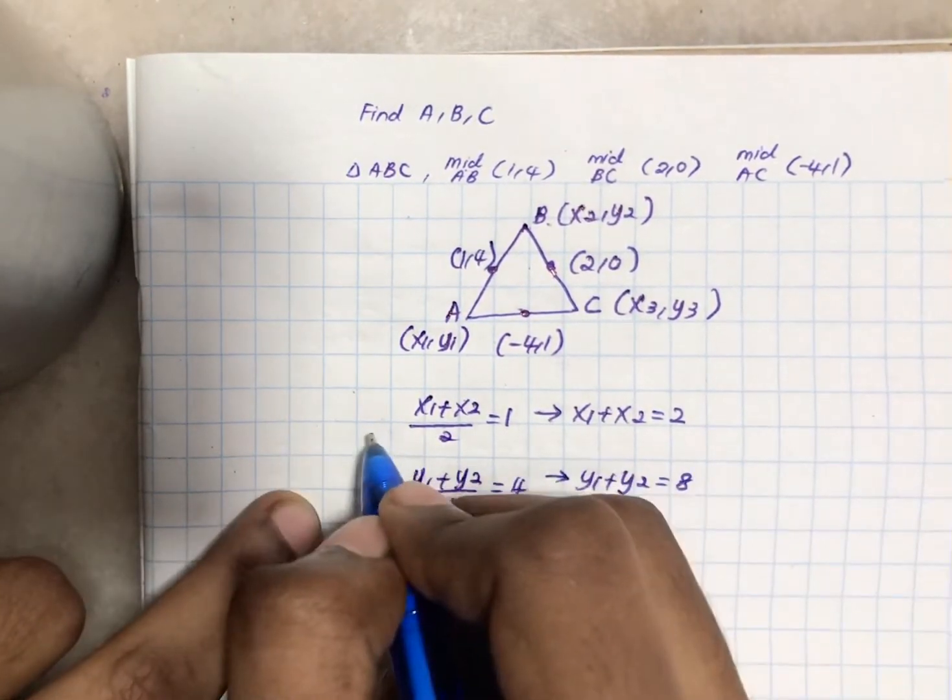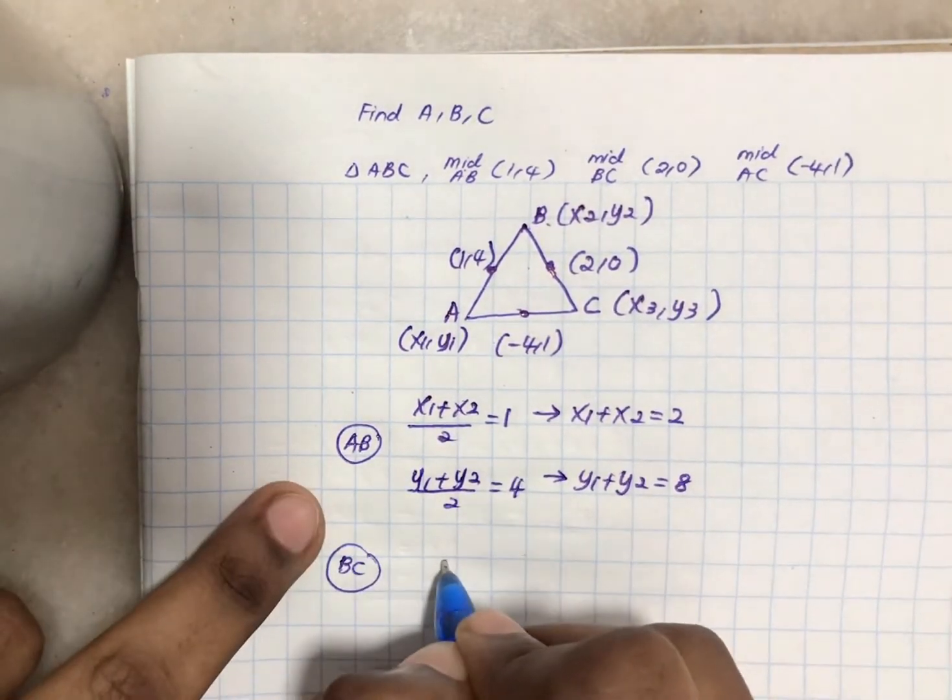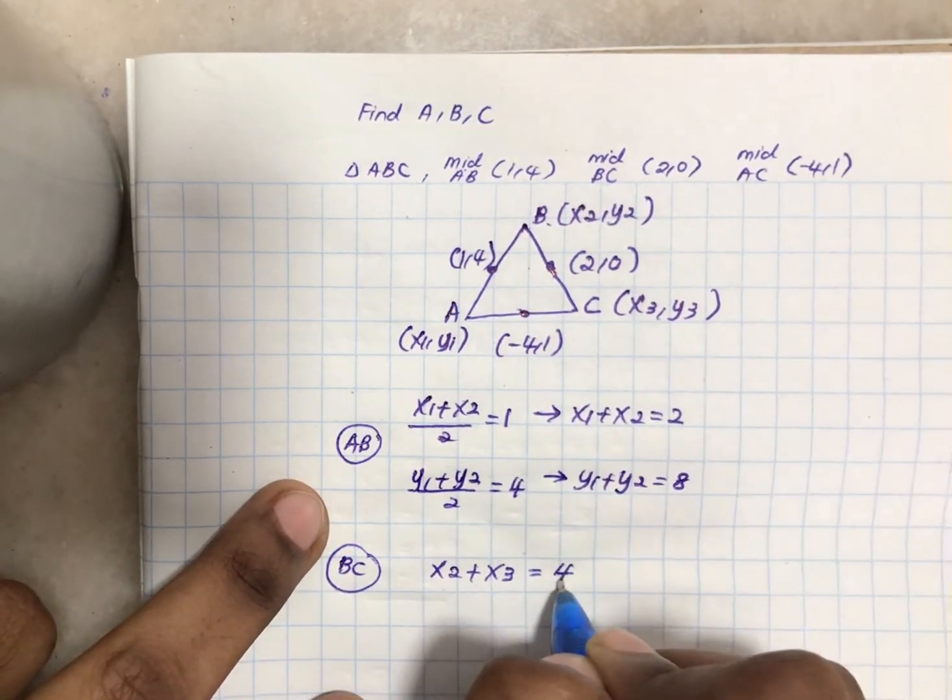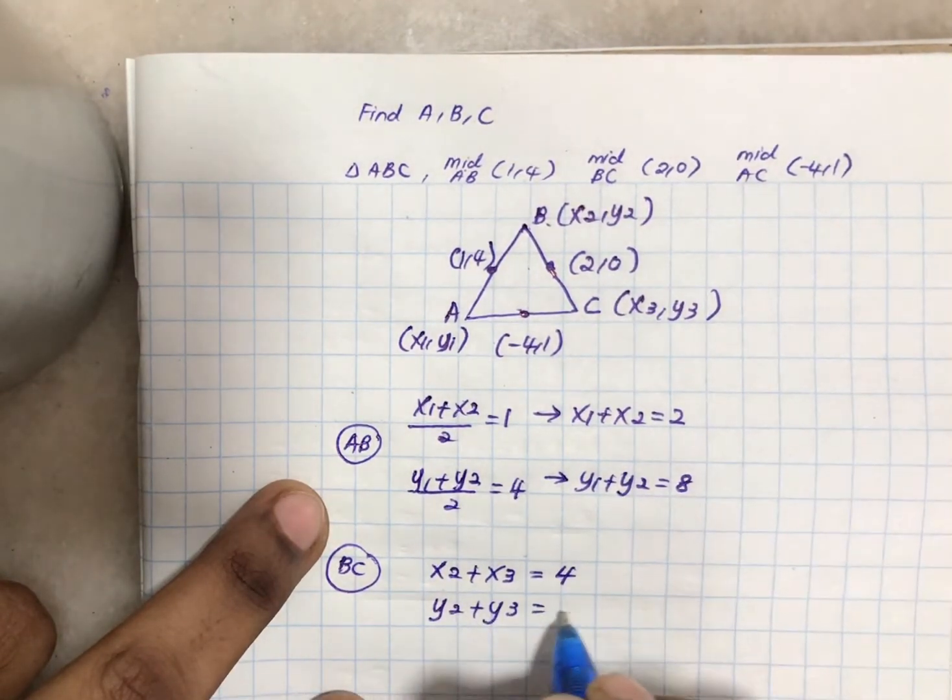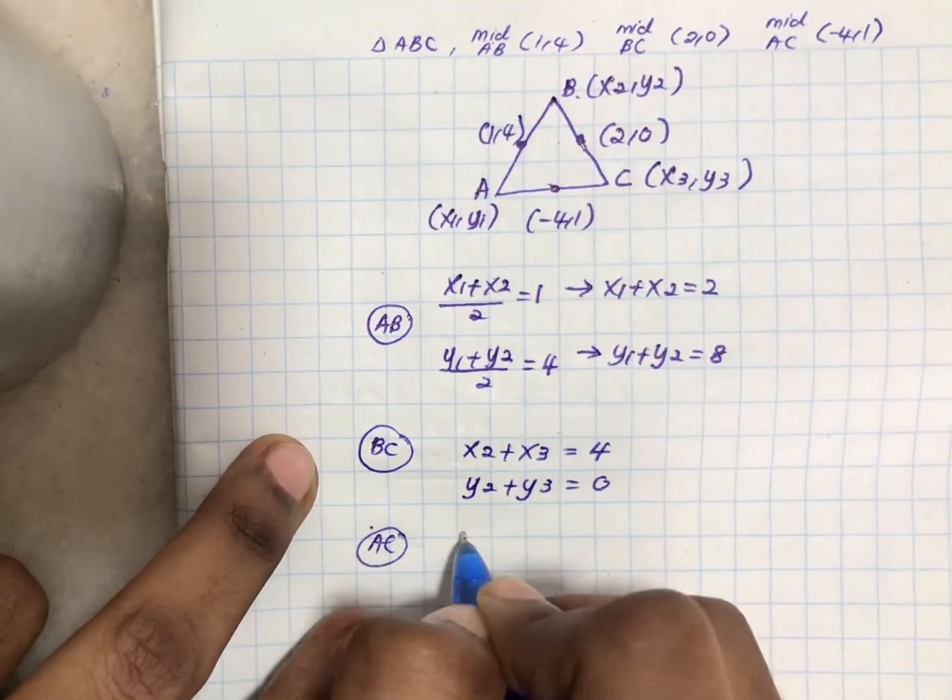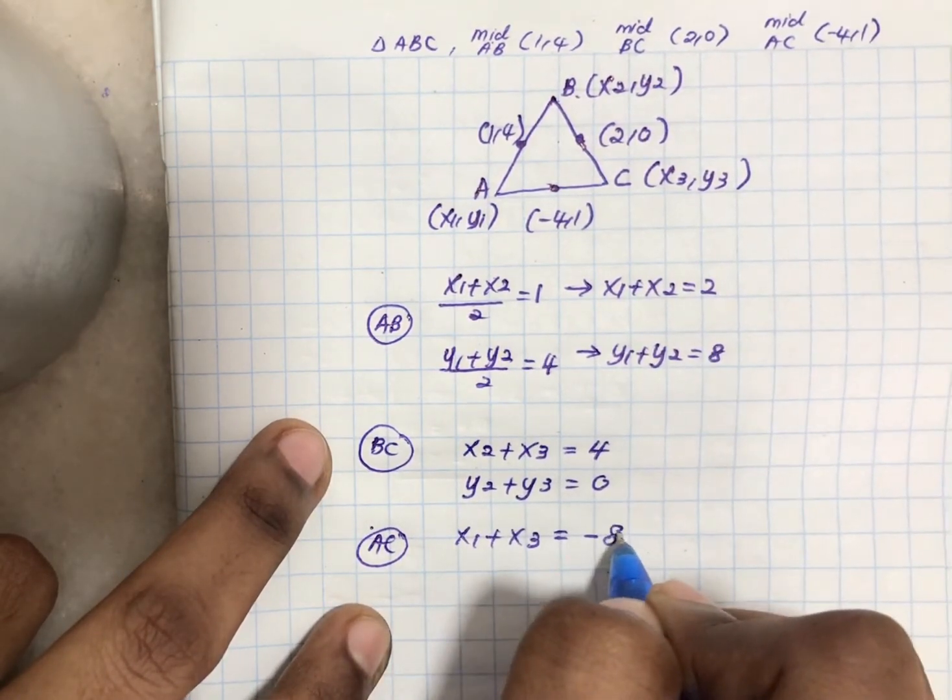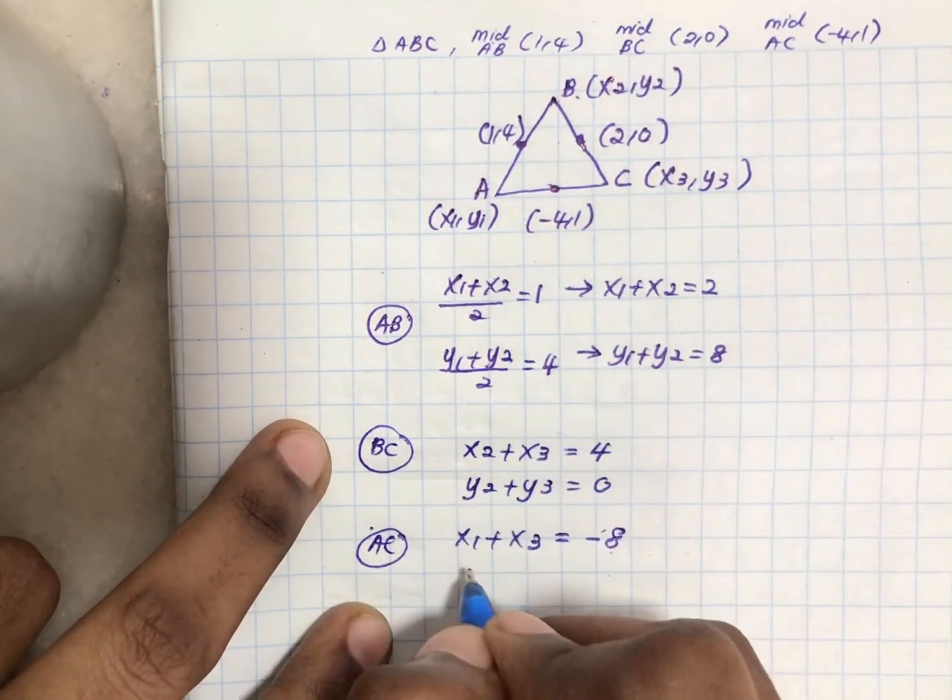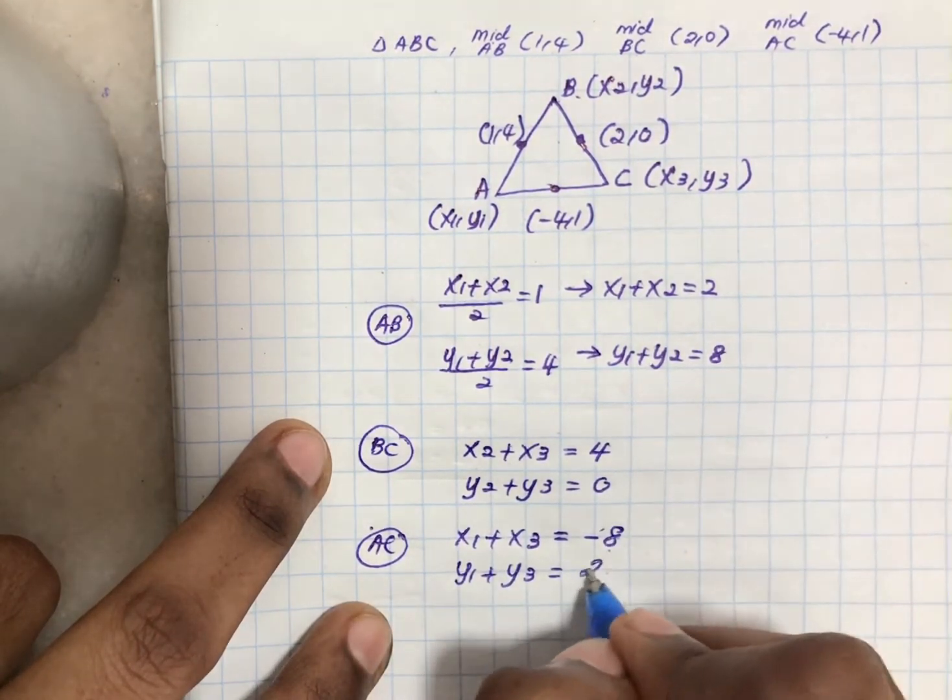We can do this for all midpoints. For BC we get x2+x3 = 4 and y2+y3 = 0. For AC we get x1+x3 = -8 (since divided by 2 equals -4, so multiply to get -8) and y1+y3 = 2.